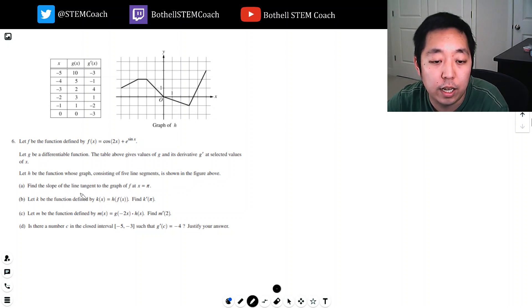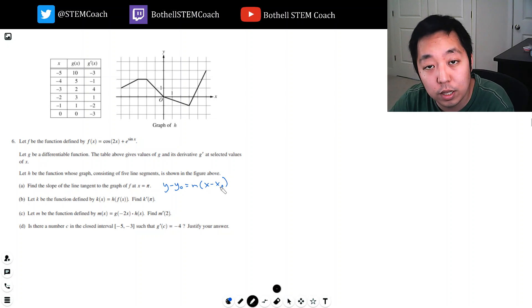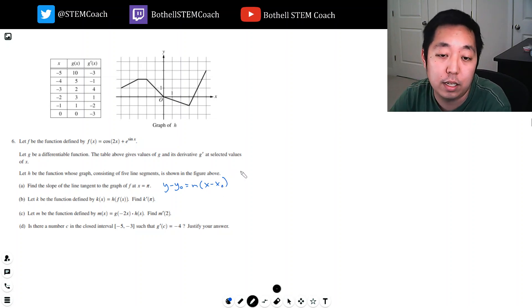Find the slope of the tangent line to the graph of f at x equals π. For a tangent line, I need two things: the slope of the line and the point that the line is going through. At x equals π, f equals cosine of 2π plus e to the sine π. Cosine of 2π is 1, sine of π is 0, e to the 0 is 1, so that's 2. So the point goes through π, 2.